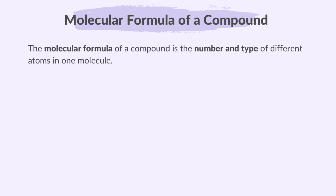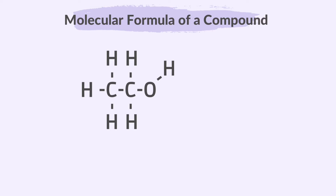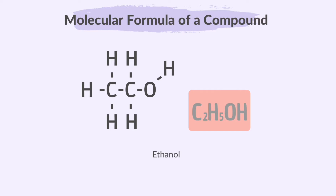The molecular formula of a compound is the number and type of different atoms in one molecule. Let's look at the structure of methane. Methane is a molecule consisting of one carbon atom bonded to four hydrogen atoms, so its molecular formula is CH4. This picture shows how atoms are arranged in the molecule. The chemical formula for a compound is determined by looking at how many of each type of atom it contains. This molecule has two carbon atoms, six hydrogen atoms, and one oxygen atom, so its formula would be C2H5OH, which is ethanol.